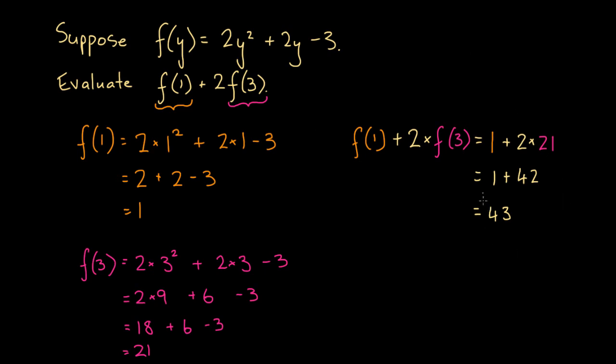That's how we evaluate an expression that has a couple of these f of somethings in them. What we do is we evaluate all of them to begin with, and then we substitute them in and simplify.